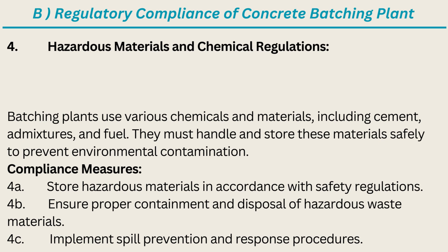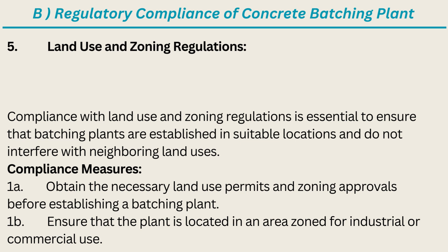C. Implement spill prevention and response procedures. 5. Land Use and Zoning Regulations. Compliance with land use and zoning regulations is essential to ensure that batching plants are established in suitable locations and do not interfere with neighboring land uses. Compliance Measures: A. Obtain the necessary land use permits and zoning approvals before establishing a batching plant. B. Ensure that the plant is located in an area zoned for industrial or commercial use.